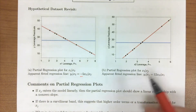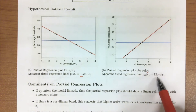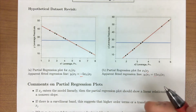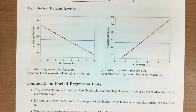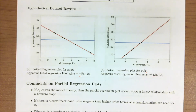Same idea for x2: given that x1 is in the model and accounted for, our x2 slope is 12. That's the idea. For multiple linear regression, our variables are impacting each other, and scatter plots by themselves cannot help us really understand what's going on between all of these variables. So partial regression plots or added variable plots provide us with a visualization to understand the relationship of a variable on the response, given that the other variables have been accounted for.